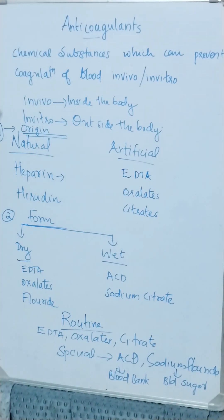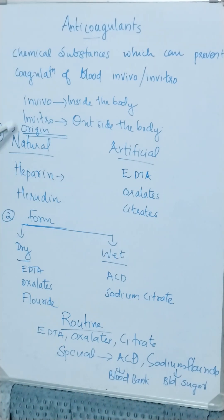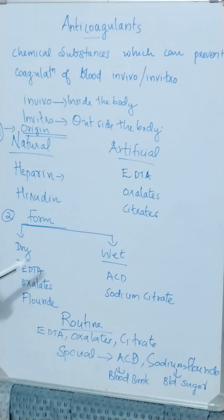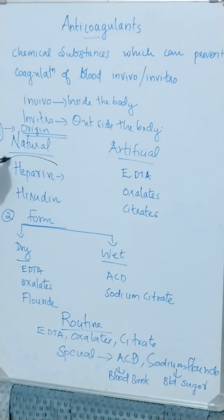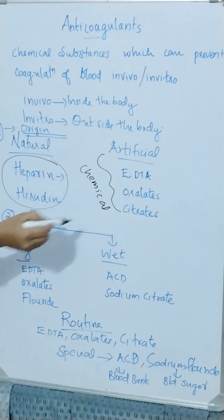Anticoagulants are chemical substances which can prevent the coagulation of blood in vivo or in vitro. 'In vivo' means inside the body and 'in vitro' means outside the body. According to their origin, anticoagulants are classified into natural and artificial. Natural anticoagulants include heparin and hirudin. Artificial anticoagulants include EDTA, oxalates, and citrates.